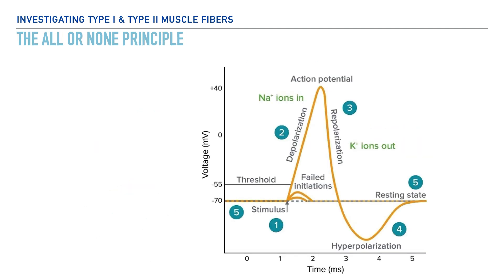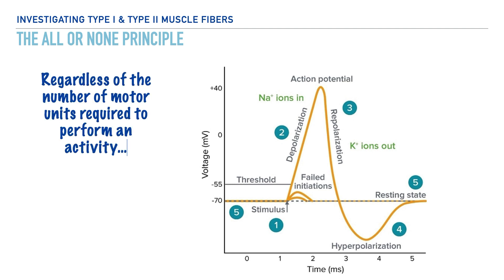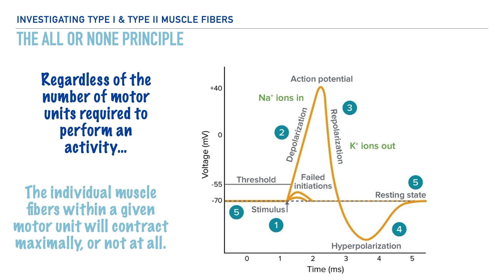Now to the all-or-none principle: regardless of the number of motor units required to perform an activity, the individual muscle fibers within a given motor unit will contract maximally or not at all. Here's a graph representing the initiation of an action potential. The normal resting membrane potential for a neuron is negative 70 millivolts, and to activate a neuron or muscle we need a stimulus that surpasses the threshold of roughly negative 55 millivolts. When this happens, all of the muscle fibers within that motor unit will fire — hence the principle: all or none.